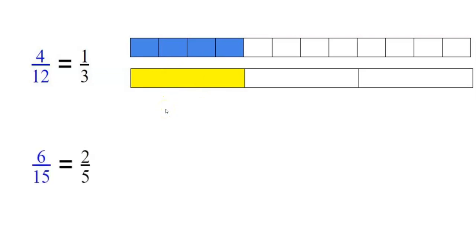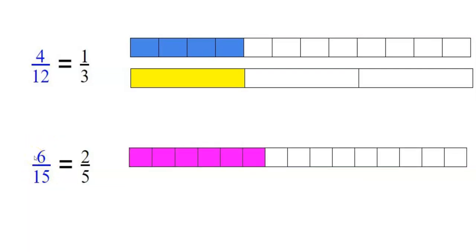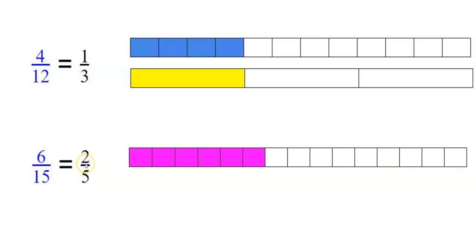Let's take another fraction: 6 over 15. If we take a bar and divide it into 15 parts with six shaded, and compare it to a bar divided into five parts with two shaded, we can see they are equal. So therefore 6 over 15 is equal to 2 over 5.